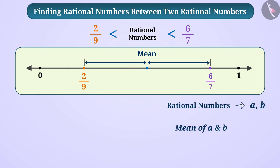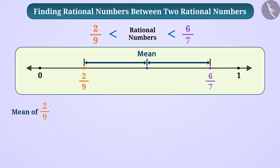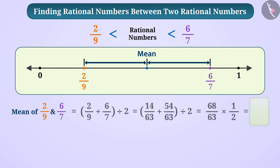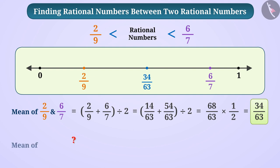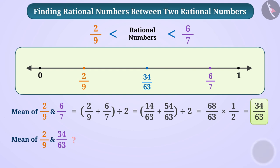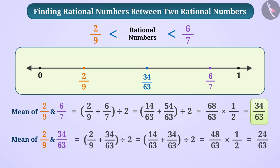The mean of any two rational numbers a and b is (a + b) divided by 2. We will divide the sum of both rational numbers by 2. The mean of 2 by 9 and 6 by 7 is equal to 34 by 63. This is the rational number between 2 by 9 and 6 by 7. Finding the mean of 2 by 9 and 34 by 63 gives us 24 by 63, which lies between 2 by 9 and 34 by 63.